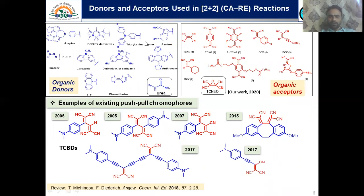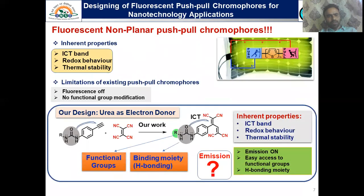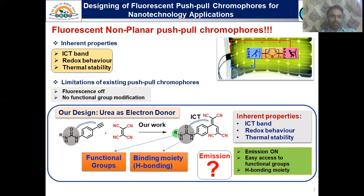The blue-colored molecules are some of the donor molecules present in the literature, and these are some of the acceptor molecules. We added urea in the donor part and a new acceptor in the acceptor part to the library of donor-acceptor parts. These are push-pull chromophoric systems reported over the last decade. The inherent known properties of the push-pull system were: they were stable, they had reversible redox behavior, and they had a strong ICT band. However, their limitation was that they were non-fluorescent, with no functional group modification available.